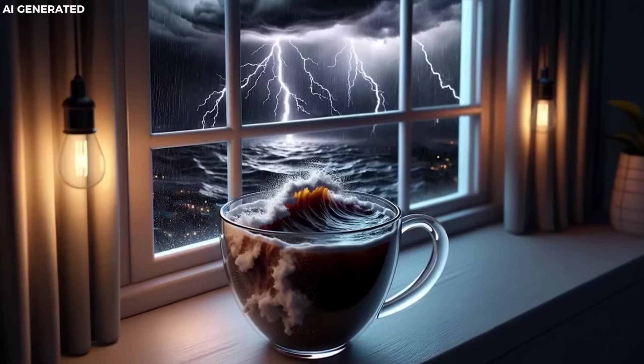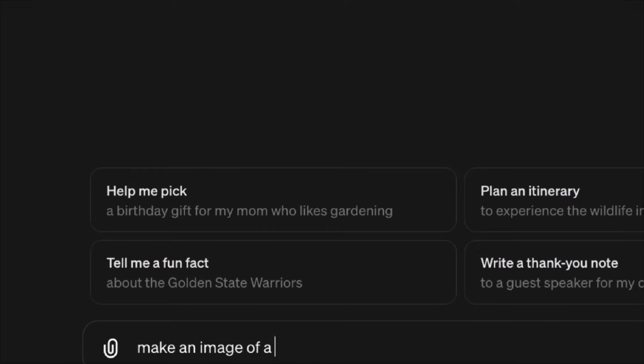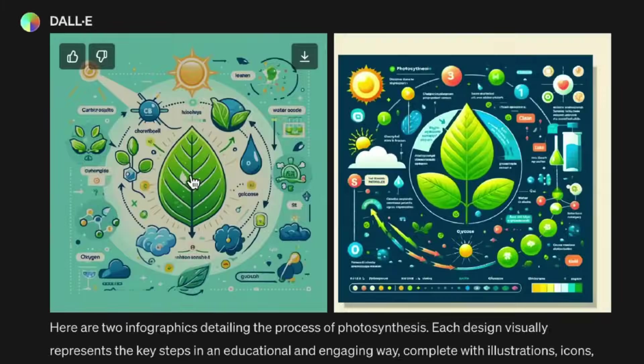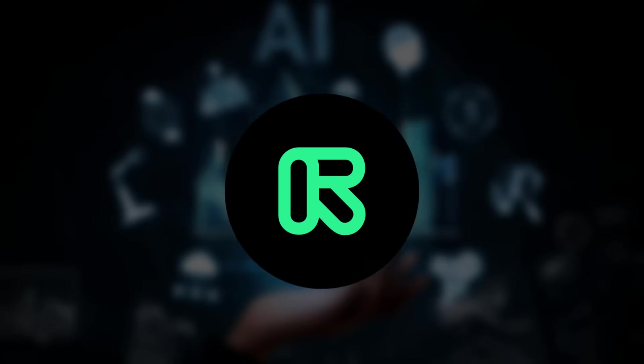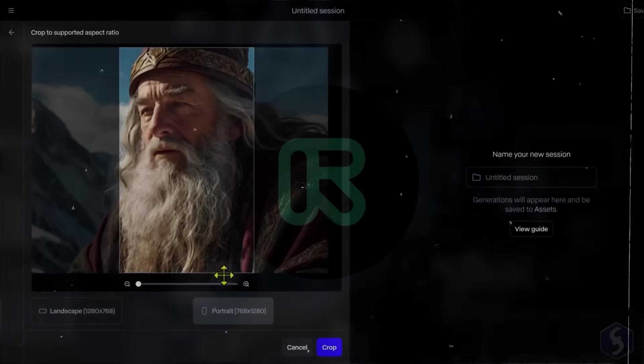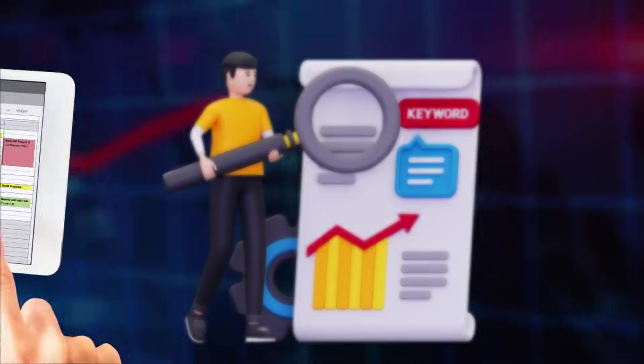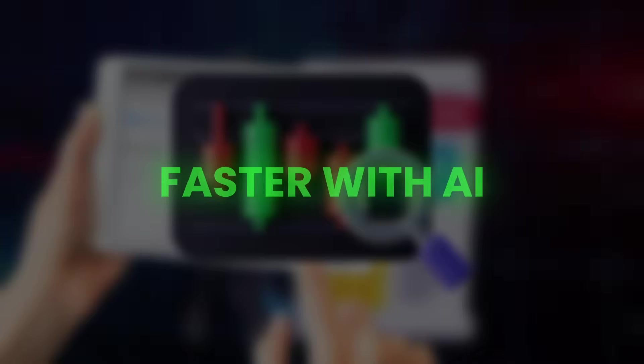Number two, it enhances creativity. Generate art, videos or content ideas. For example, use DALL-E to create social media posts, YouTube thumbnails, or marketing visuals instantly. Use Runway AI to turn a blog post into a short engaging video without complex editing. Number three, it saves time. Research, scheduling, and translations are faster with AI.